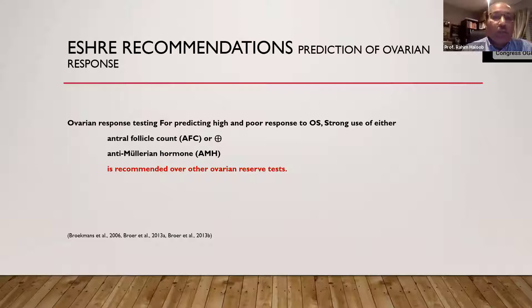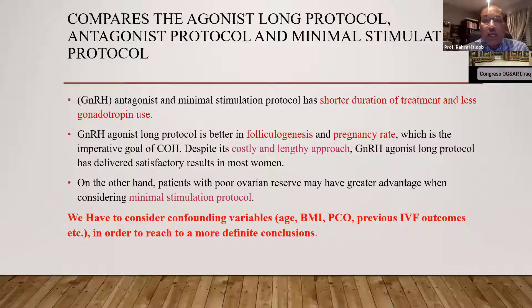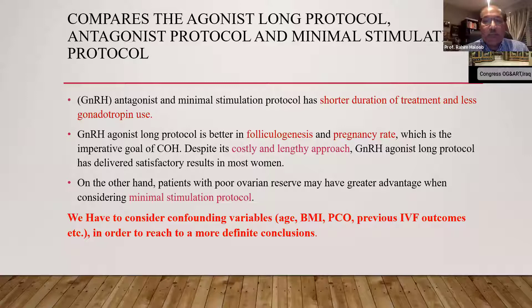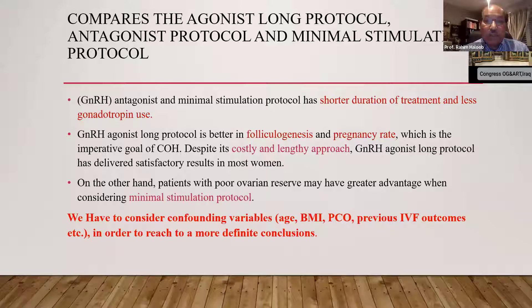We have three protocols: the GnRH agonist protocol, the GnRH antagonist protocol, and the minimal stimulation protocol. The minimal stimulation protocol is shorter in duration and uses less gonadotrophin — so it is financially cheaper. However, we need to look at the outcome. The GnRH agonist long protocol is better for follicular growth with a better pregnancy rate, but it costs more and is a lengthier procedure. Patients with poor ovarian reserve may have a greater advantage with minimal stimulation, as it can be repeated many times.